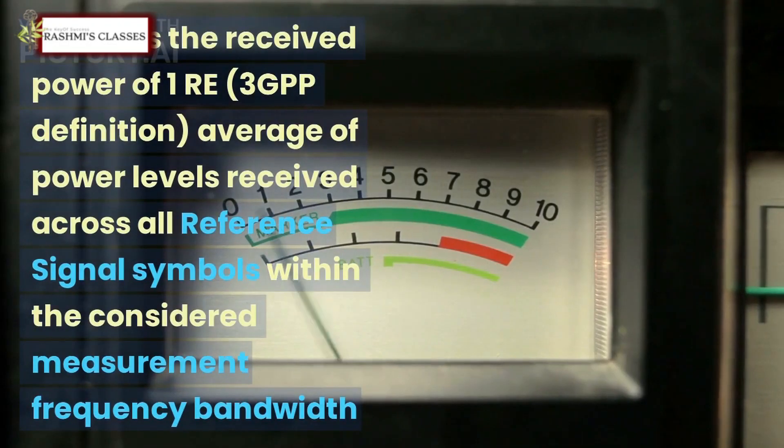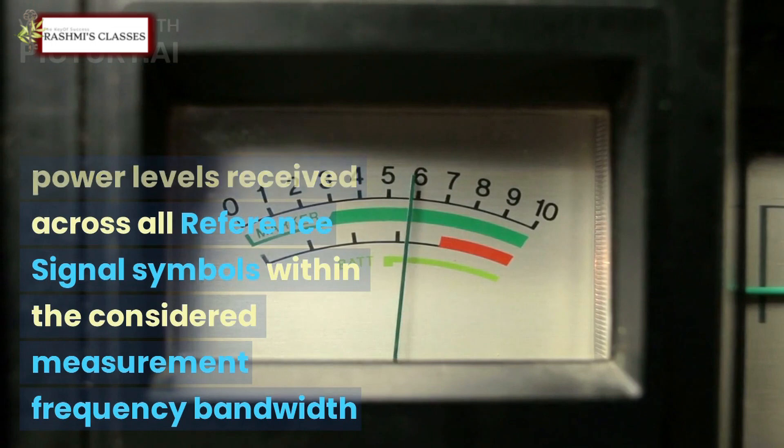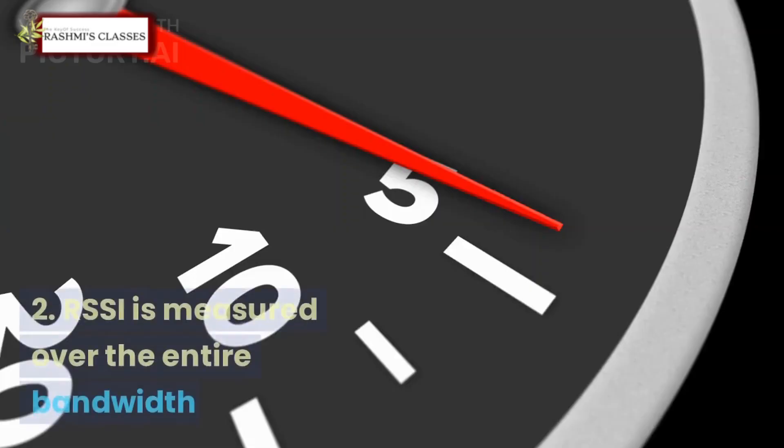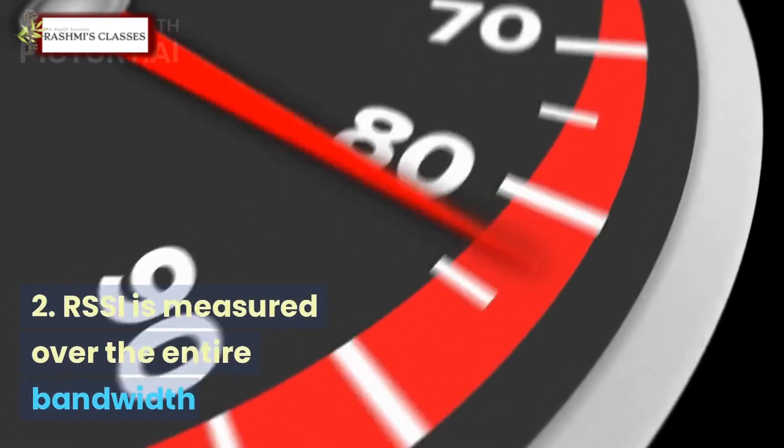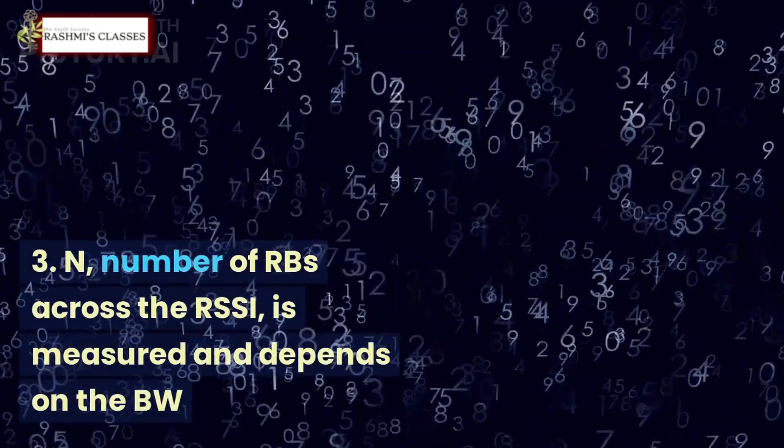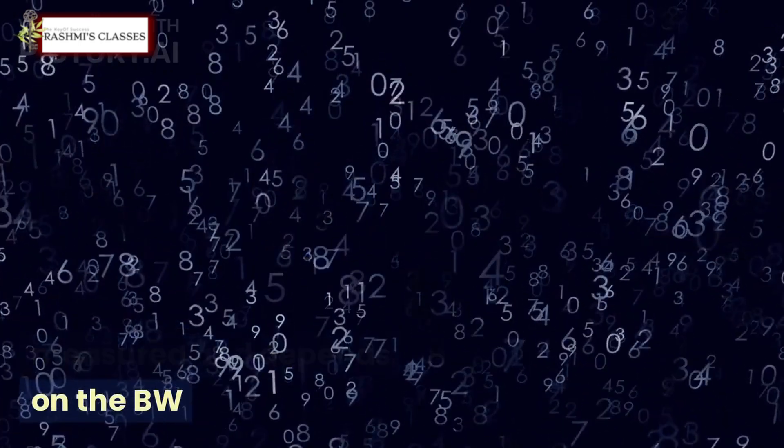Where 1 RSRP is the received power of 1 RE. 3GPP definition: average of power levels received across all reference signal symbols within the considered measurement frequency bandwidth. 2. RSSI is measured over the entire bandwidth. 3. N - number of RBs across which RSSI is measured and depends on the bandwidth.